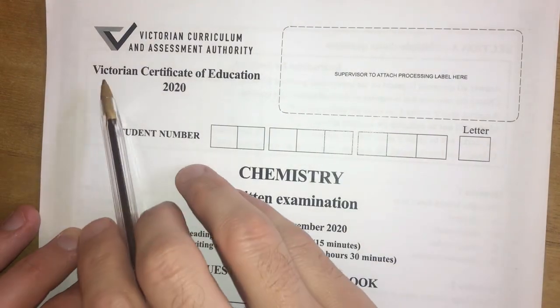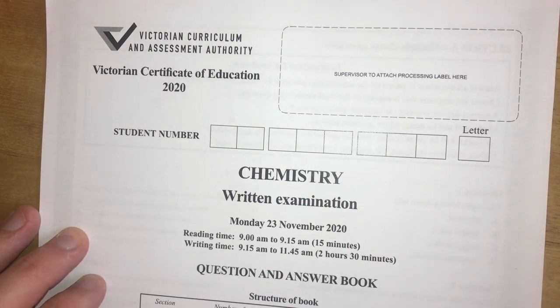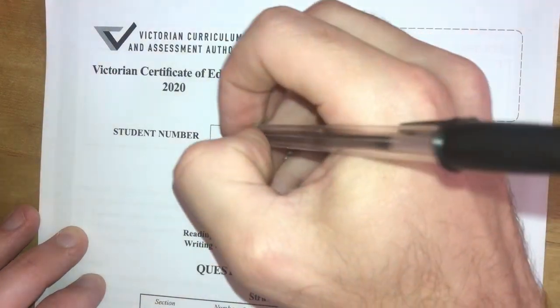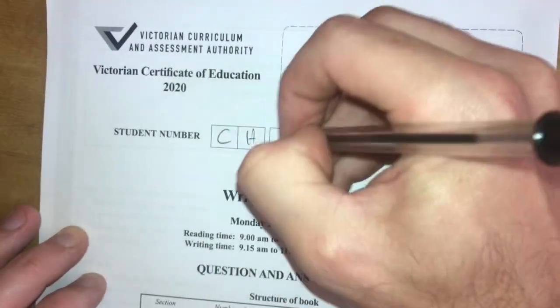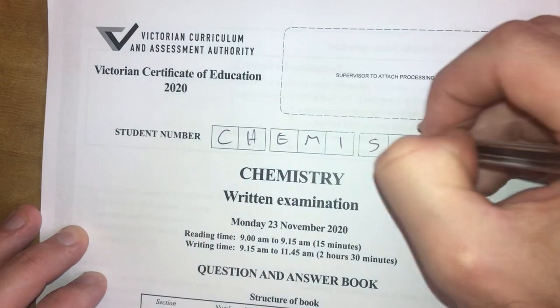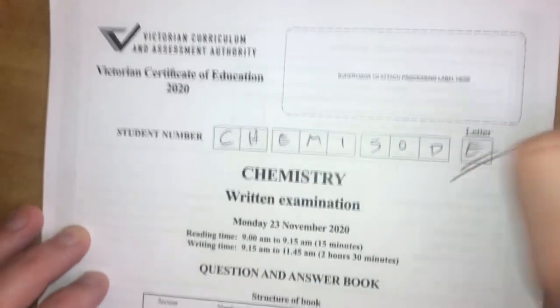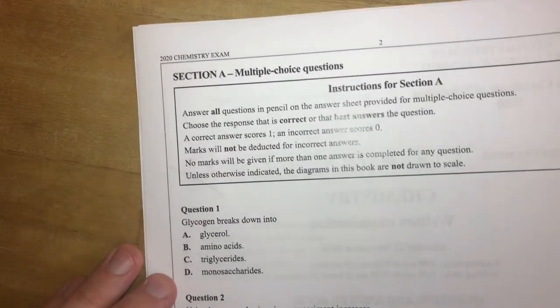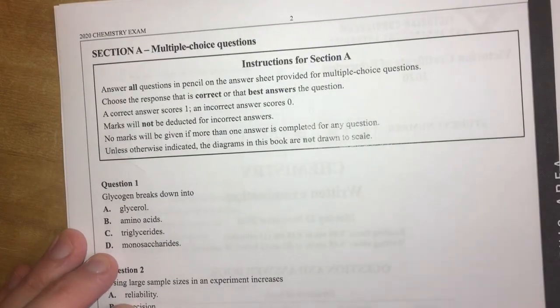So here we are with the VCE 2020 Chemistry exam and we're going to do a walkthrough with it. Our student number will be chemisode and let's get stuck straight into it. Okay, so first question on our 2020 VCE Chemistry exam.